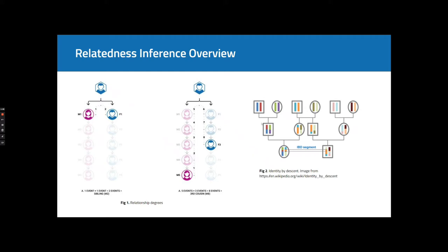Every person inherits half of each of his parents' DNA in chunks. Then some of these chunks will be passed to the next generation, possibly broken in the process called recombination. And if two people have identical chunks of DNA inherited from the common ancestor, they are relatives, and these chunks are called IBD segments.